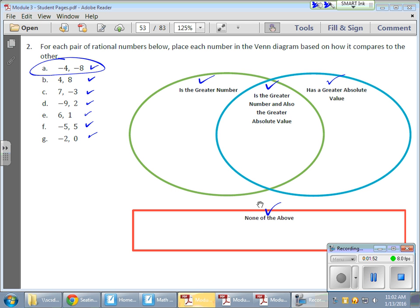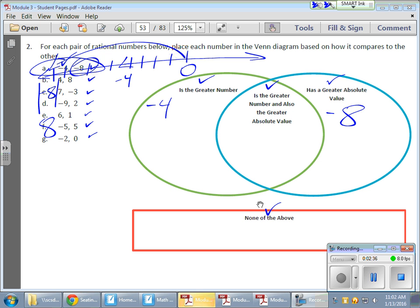So we have negative four and negative eight. So that negative four, is it the greater number? Well, on a number line, here's that zero, 1, 2, 3, 4, here's my negative four. If I kept on going, 5, 6, 7, 8, here's my negative eight. Negative four is a greater number. So he found a home right there because he's not the greater absolute value. Let's see, so negative eight is over here, but his absolute value is eight, or distance from zero, so the negative eight goes in here, he has the greater absolute value.